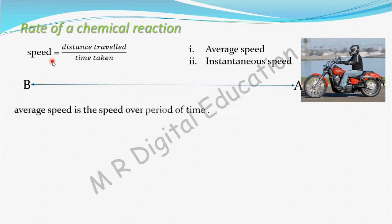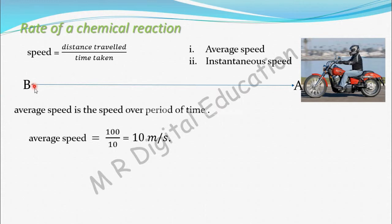Average speed is the speed over a period of time or interval. For example, suppose you travel between A and B — say a distance of 100 meters — and you took 10 seconds. Then average speed equals distance divided by time, which is 100 meters divided by 10 seconds. We take the average over the interval, regardless of how speed may increase or decrease in between.